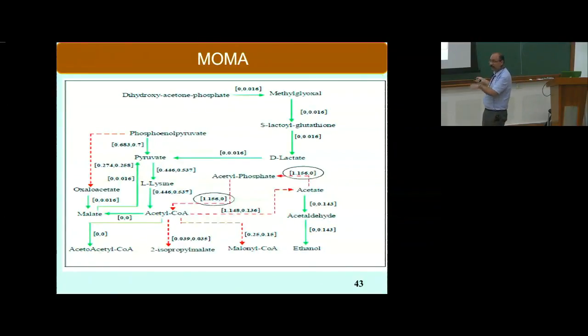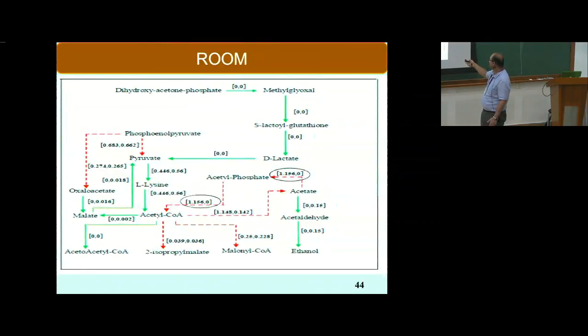When we do the simulations for this particular mutant, using this technique called MoMA, which is a similar technique that analyzes the metabolism of mutants, then we get this non-zero value of the ethanol flux. I have got a superior strain now. It's not really that you can use this for a commercial purpose because it needs to be validated experimentally that whether this really happens or not. We did it using another technique also called ROOM and we got a very similar flux profile.